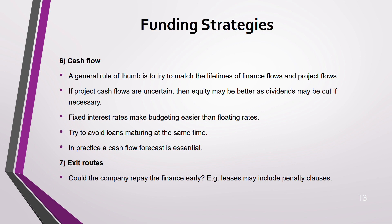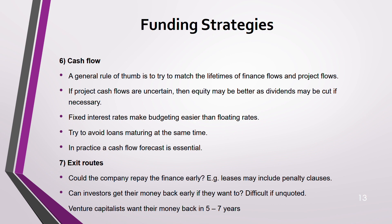The seventh factor is exit road. Could the company repay the finance early? For leases, penalty clauses apply. If the company is unquoted, investors may find it difficult to get their money back quickly. Venture capitalists typically want their money returned in five to seven years. All seven factors need to be taken into account before deciding on the correct financing strategy.